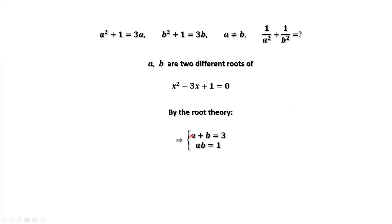The sum of two roots equals negative b. Negative negative 3 is positive 3. The product of two roots equals c. c here equals 1.